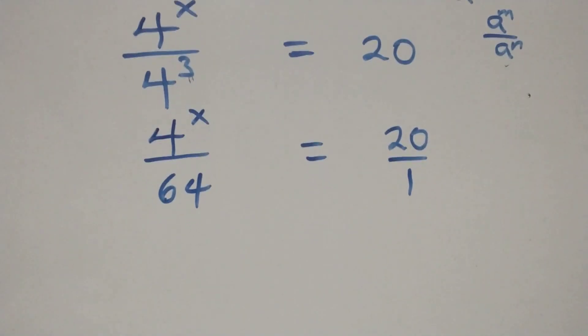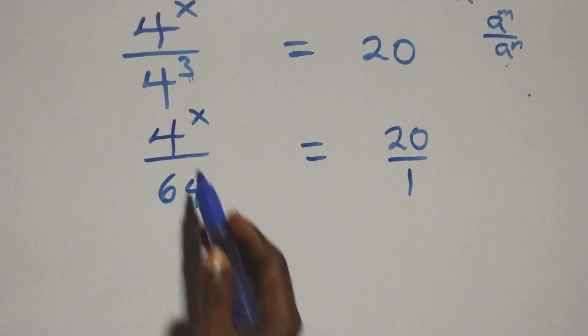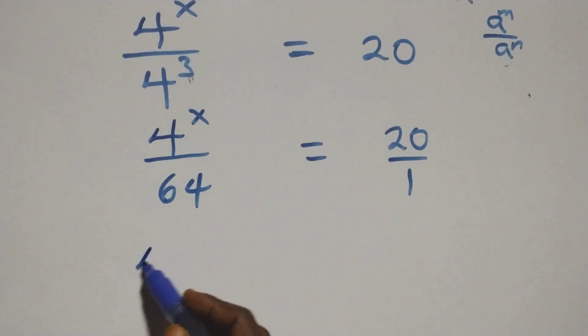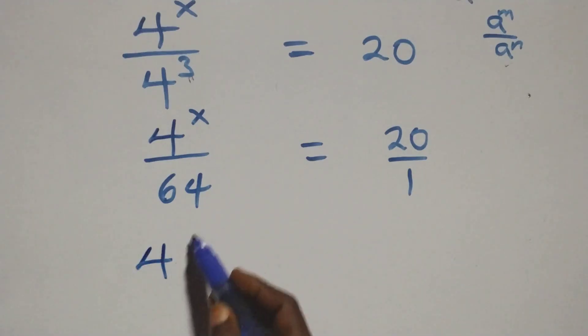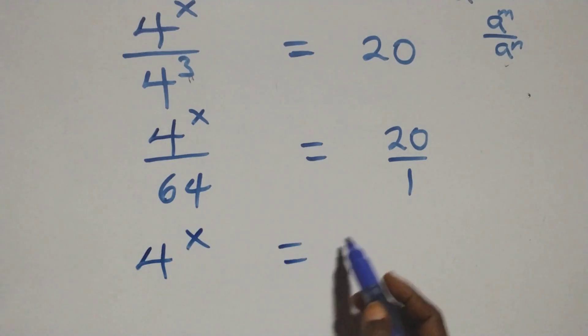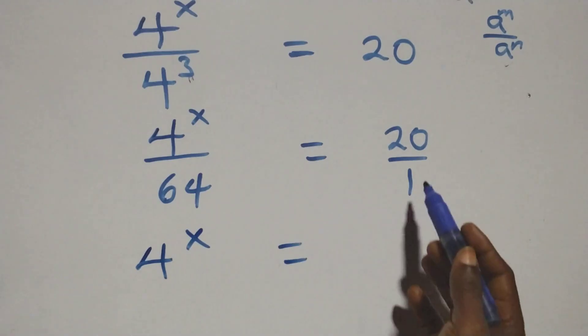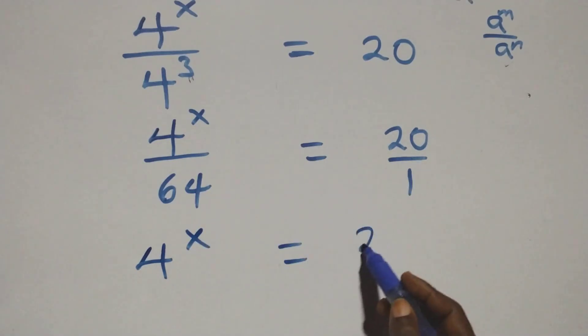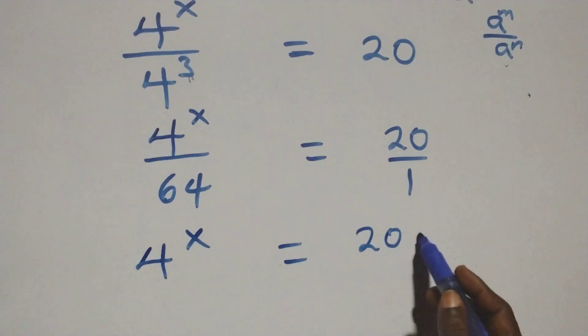Here we cross-multiply. 4 raised to power x over 1 is the same thing as 4 raised to power x, then equals to 20 times 64.